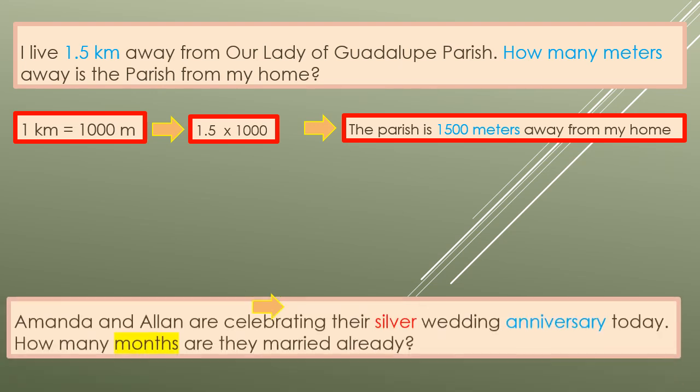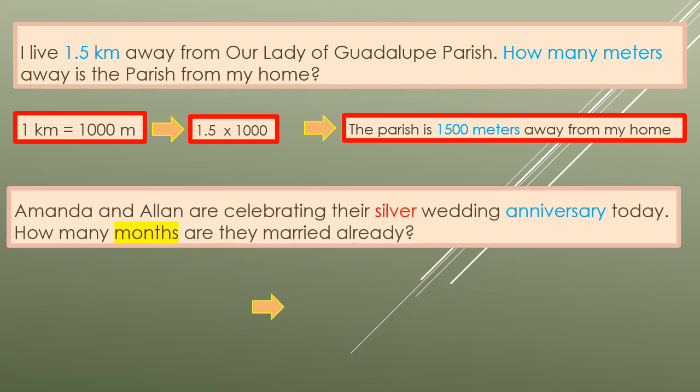Next example: Amanda and Alan are celebrating their silver wedding anniversary today. How many months are they married already? I highlighted silver and anniversary. When you say silver, we are talking of 25. Anniversary is annual, so 25 years. The question is how many months? So convert 25 years to months. Just multiply 25 years times 12 months and that will give you 300.